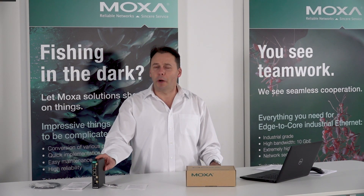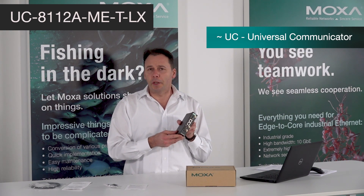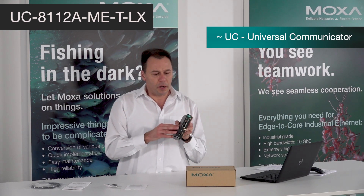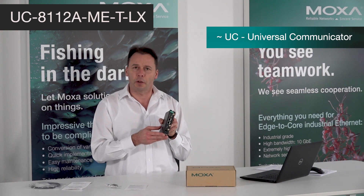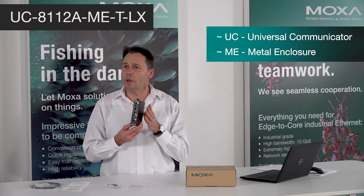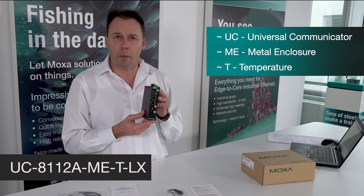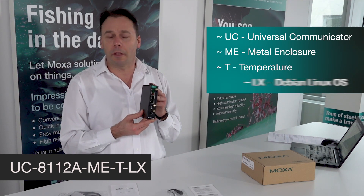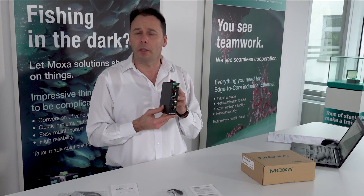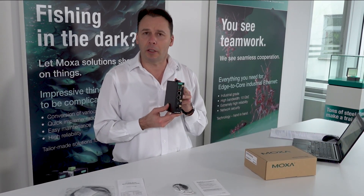I'd like to explain Moxa's naming conventions for UC embedded computers. The acronym UC stands for Universal Communicator, which applies to all platforms — the UC 2100, 3100, and 5100 series. The 8100 series was the first series Moxa developed, and this is its successor. In the name, the capital letter M-E stands for Metal Enclosure, the capital letter T means Temperature — this device is designed for an extended temperature range — and the two capital letters L-X stand for Linux, as the Linux operating system is installed on it. We call it Moxa Industrial Linux, which is based on Debian 9 running kernel 4.4, and we provide 10 years of support for this operating system.